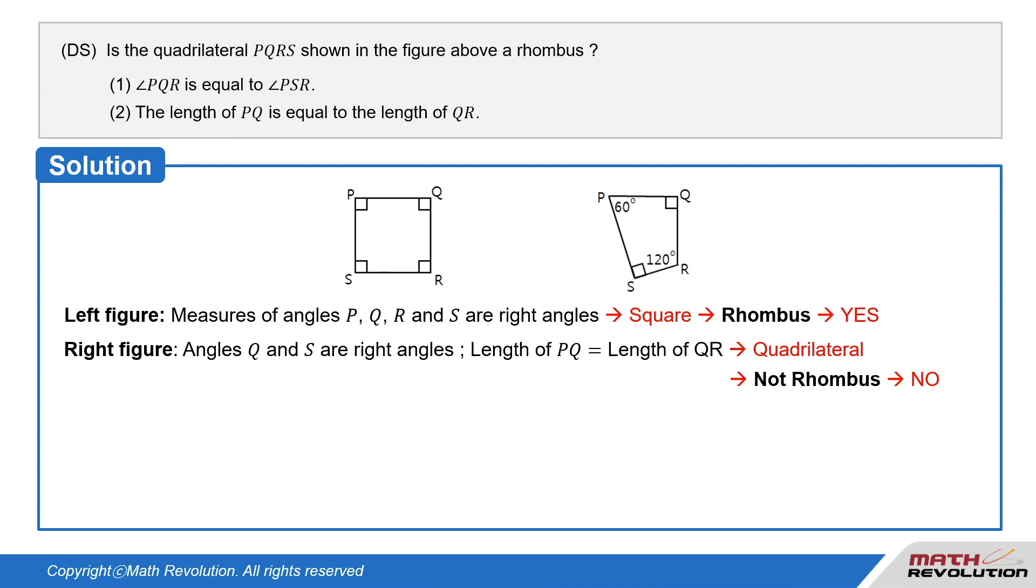If the quadrilateral looks like the figure on the right above, where angles Q and S are right angles and the length of PQ and QR are equal to each other, it is not a rhombus and the answer is no.